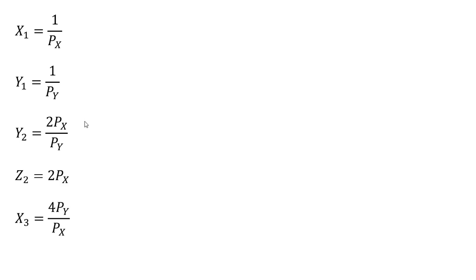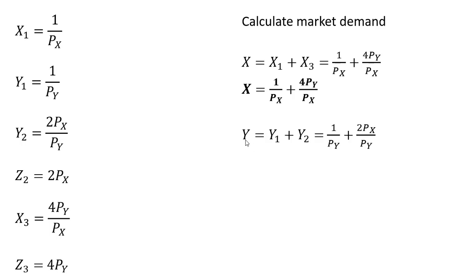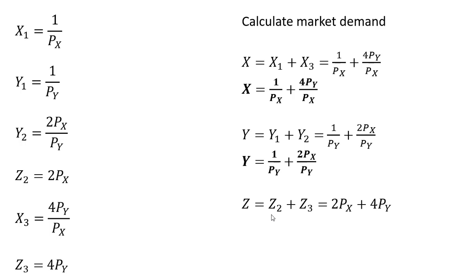Rewriting the demand equations for all three consumers after normalizing the price of good z to 1. Our next step is to calculate market demand. The market demand for good x is consumer one's demand for good x plus consumer three's demand for good x. That is the market demand for good x. Doing the same for good y, we add up the individual demands to get market demand for good y. Finally, for good z, we add consumer two's demand for z and consumer three's demand for z.